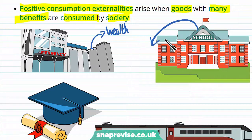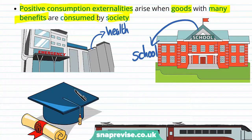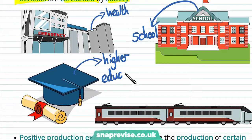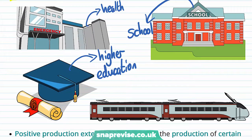Schooling is another positive externality because more educated people are helpful to firms. Taking that further, higher education — such as university, college, and apprenticeships — develops and builds skills. All of these skills that are picked up and developed are going to help an economy's production.